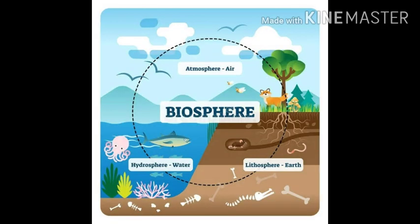Natural vegetation and wildlife exist only in the biosphere. In the biosphere, living beings are interrelated and interdependent on each other for survival. This life-supporting system is known as an ecosystem.